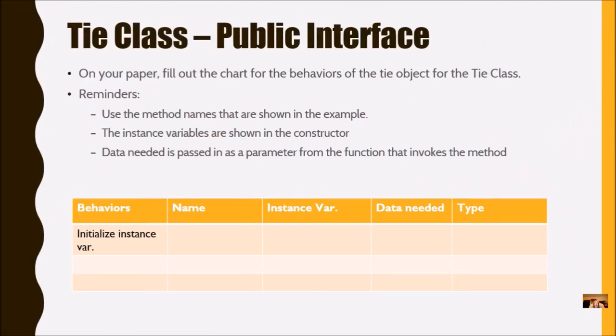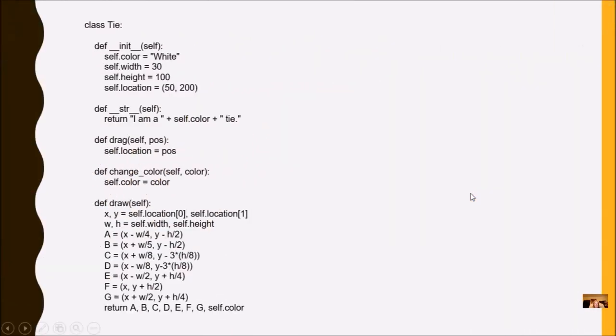Let's do one more example. This is for the Thai class. Hopefully you've already gotten to this program, and you had a good time programming it. This one was Lesson 5. So on your paper, you're going to fill out the chart for the behaviors of the Thai object for the Thai class. Same reminders as before. Remember to fill out the type. Here's your code. So work together in a group and fill out your chart. You can turn off the video, complete this part, and then turn back on the video for more instructions.